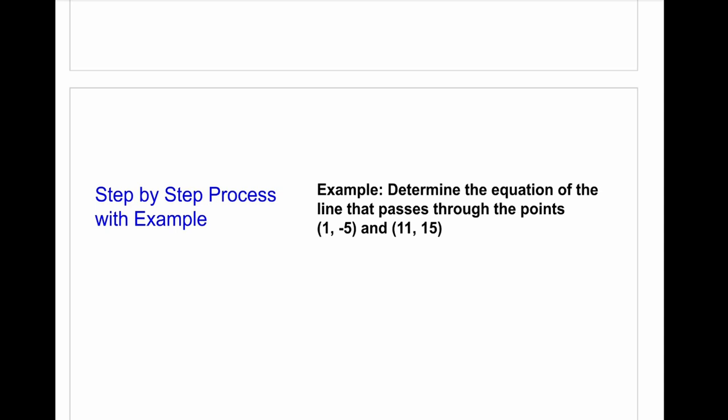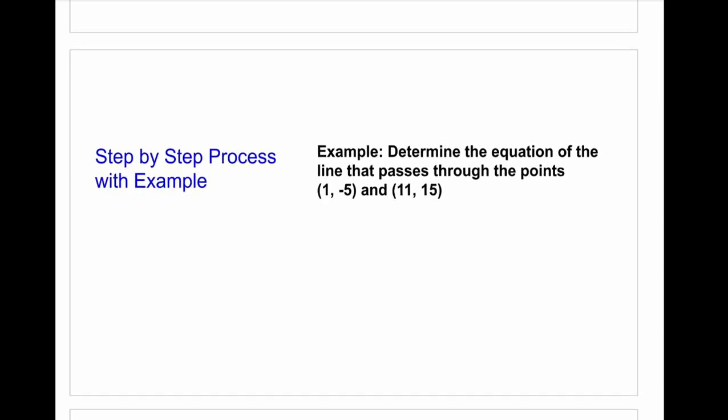The first example we're going to look at is: determine the equation of the line that passes through the points (1, -5) and (11, 15). One thing to note — remember a point is always given as an x and a y coordinate. Just make sure we remember that because it's going to be useful going forward.